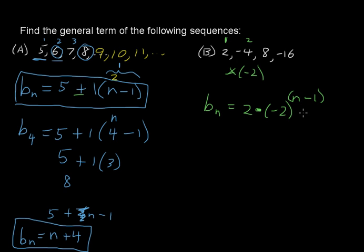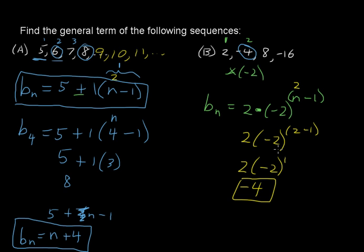I'm plugging in 2. If I want to plug in to get this second term, I want to plug in 2 for n. Does it work? Well, 2 times negative 2 to the 2 minus 1, and yeah, that does work. 2 times negative 2 to the first power is just 2 times negative 2, which is negative 4. That gives us our second term.